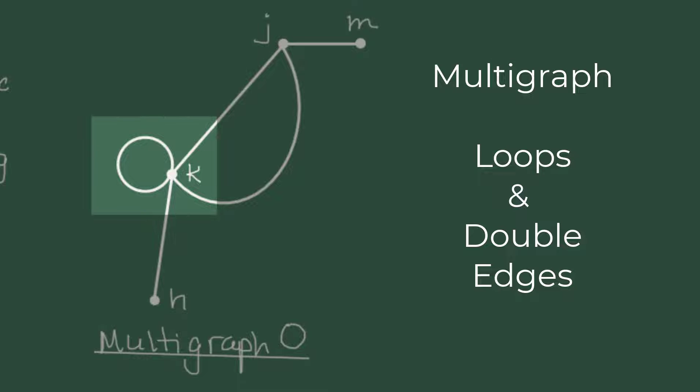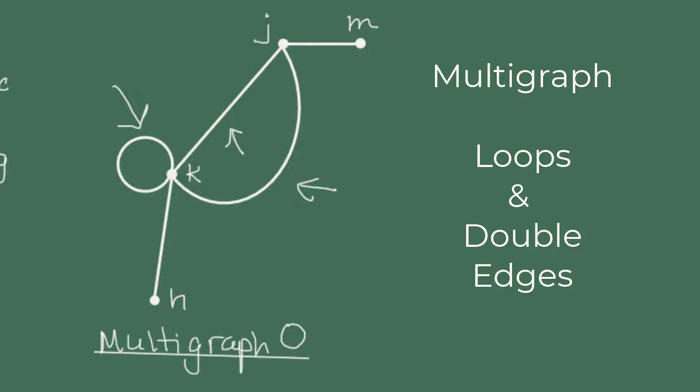multigraph O has a loop where vertex K is connected to itself and it has a double edge between J and K. If a graph has either of these characteristics, we'll refer to it as a multigraph, not a simple graph.